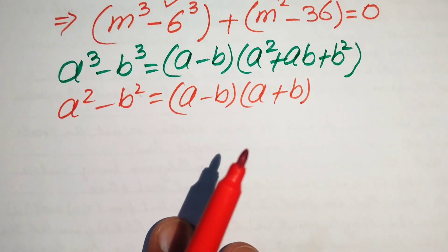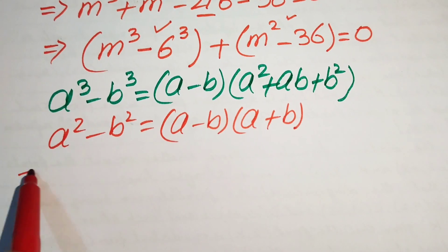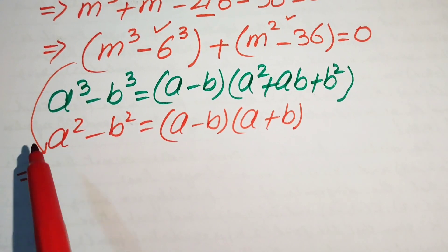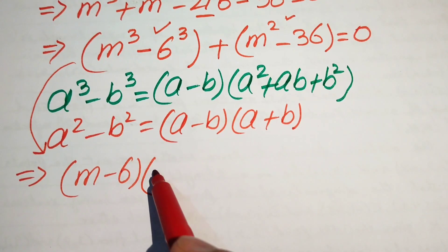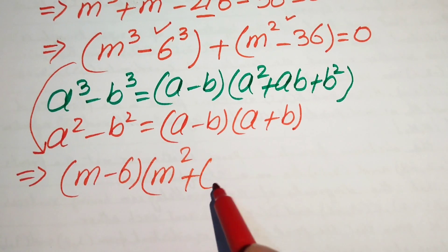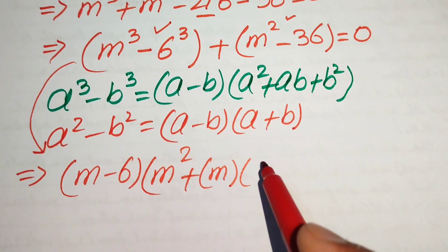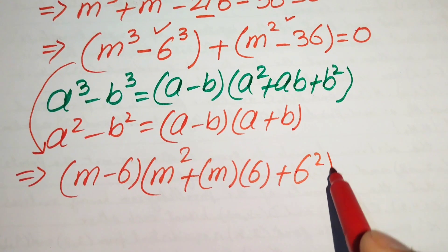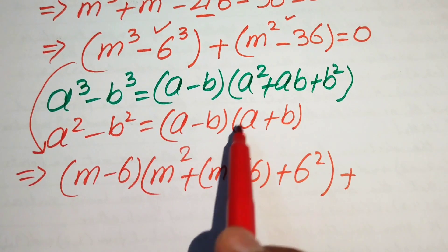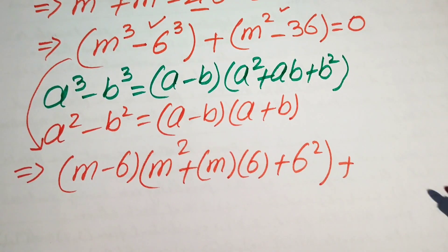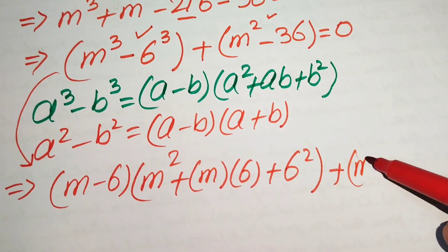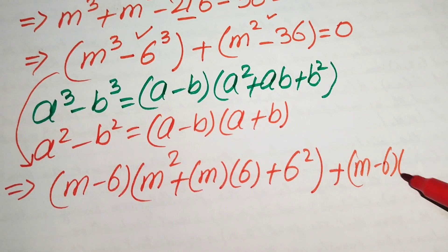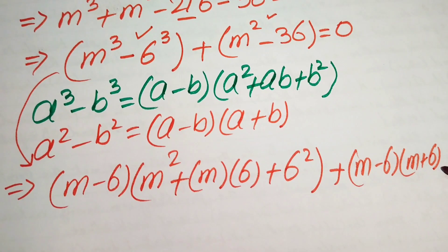Applying the cubic formula, m³ − 6³ becomes (m − 6)(m² + 6m + 36). Since we write 36 as 6², we apply the difference of squares formula to m² − 36, giving (m − 6)(m + 6).